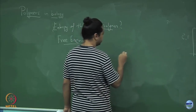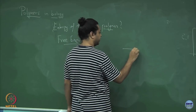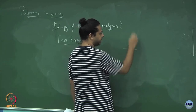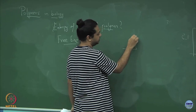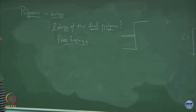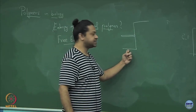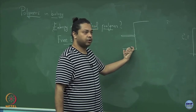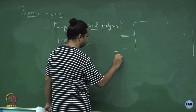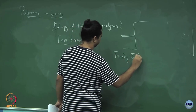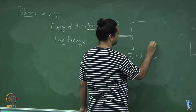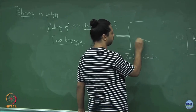Now let's think about this ideal polymer — the random walk or Gaussian polymer, called Gaussian because the probability distribution is Gaussian, or also called the freely jointed chain. How am I constructing this polymer? I take a step of length a and then take another step; drawing it in 2D, I can take another step in any of the four directions. There is no correlation between one step and the next — it retains no memory of the previous step.